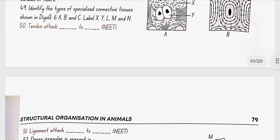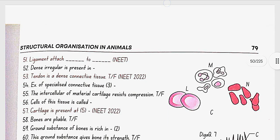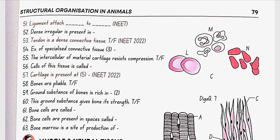Tendons attach muscle to bone. Ligaments attach bone to bone. Dense irregular is present in skin. Tendons is a dense connective tissue. Yes, this is true. Examples of specialized connective tissue: blood, bone, and cartilage.